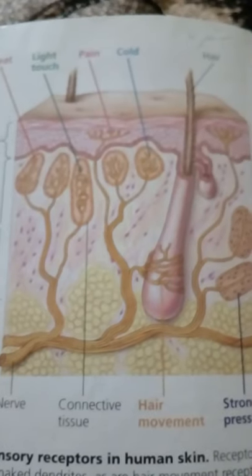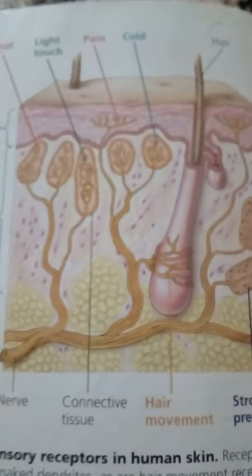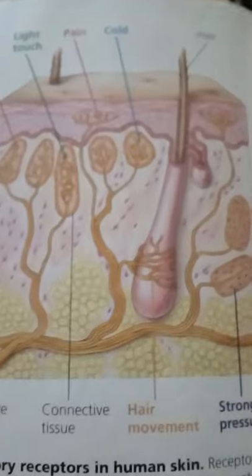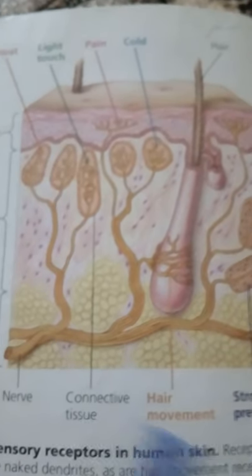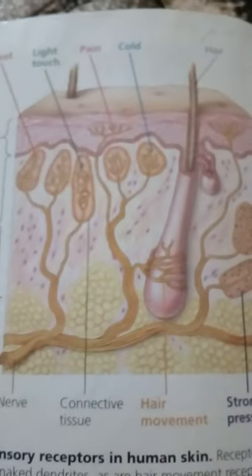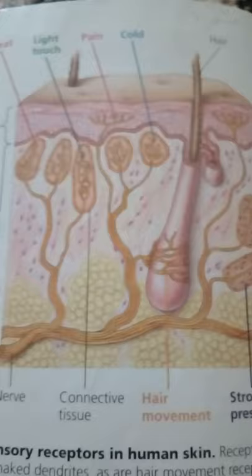Other receptors sense movement of hairs — not to be confused with hair cells. Those at the base of the stout whiskers of mammals such as cats and many rodents are extremely sensitive and enable the animal to detect nearby objects.